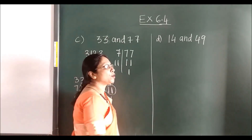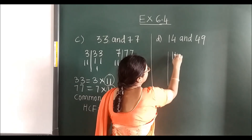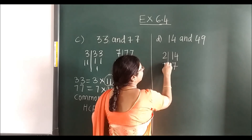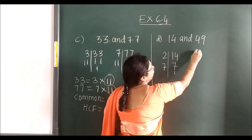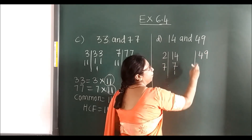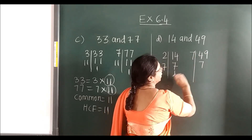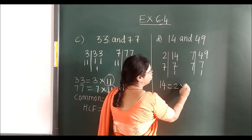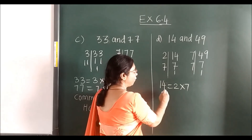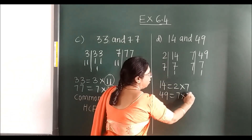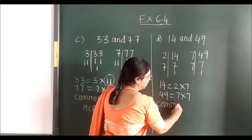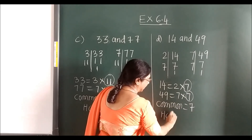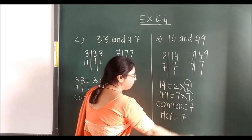Now 14 and 49. For 14: 2 sevens are 14, then 7 ones are 7 — prime factorization is 2 × 7. For 49: 7 sevens are 49, then 7 ones are 7 — prime factorization is 7 × 7. What is common? Common is 7. So HCF is 7. Once you find the common, you can easily find the HCF.